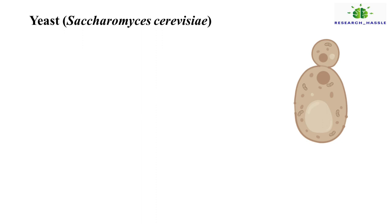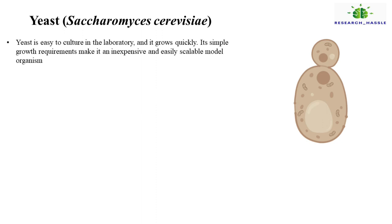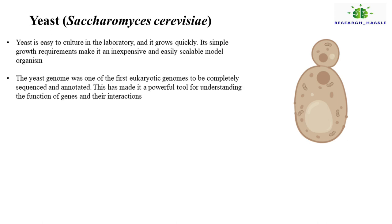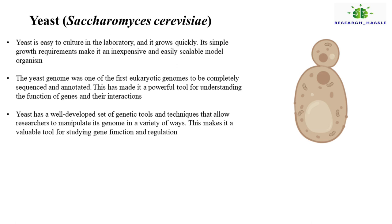First, yeast. Yeast is easy to culture in the laboratory and it grows quickly. Its simple growth requirements make it an inexpensive and easily scalable model organism. The yeast genome was one of the first eukaryotic genomes to be completely sequenced and annotated. This has made it a powerful tool for understanding the function of genes and their interactions. Yeast has a well-developed set of genetic tools and techniques that allow researchers to manipulate its genome in a variety of ways, making it a valuable tool for studying gene function and regulation.